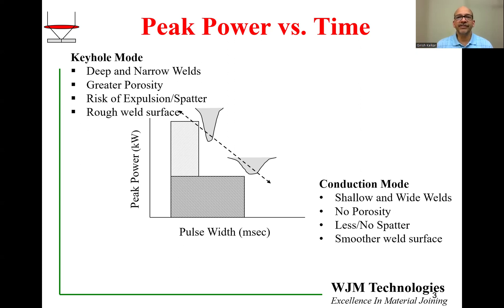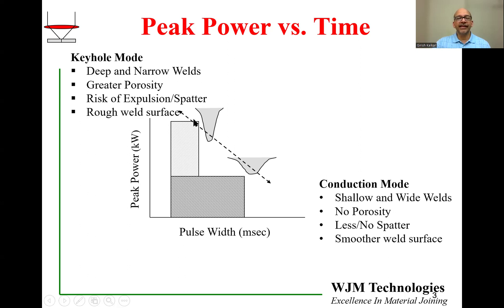The most common shape used for welding is what is called the square pulse. It has peak power on the vertical axis and time on the horizontal axis. The peak power is usually in kilowatts, time is usually in milliseconds, and the area under the curve of that pulse shape would be in joules. You can have two pulses — one with high peak power and short time, and the other with low peak power and long time — and they could have the exact same joule energy per pulse but produce significantly different effects in welding.